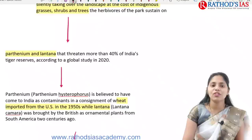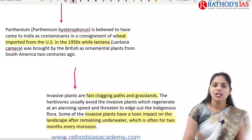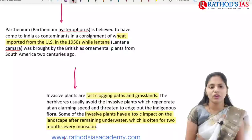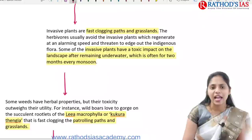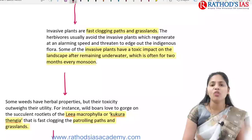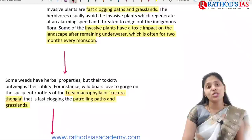Examples of invasive species include Parthenium and Lantana, which threaten more than 40% of India's tiger reserves. Parthenium is believed to have come to India as a contaminant in wheat consignments from the USA during the 1950s. Lantana was brought by the British and used as an ornamental plant from South America. Invasive plants fast clog grasslands, and herbivores generally avoid eating them.